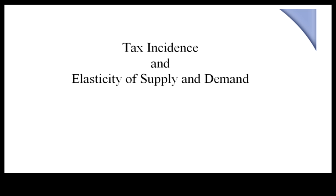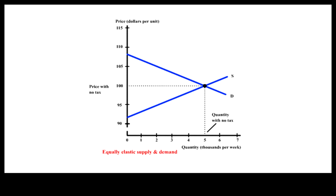Let us look at the typical supply and demand curves of a generic market. With these supply and demand curves, the market clearing price and quantity occurs at the intersection of the curves. When a uniform per-unit sales tax is imposed by the government, since the seller must pass on the collected sales tax to the government, he will continue to supply the pre-tax quantity only if he could still keep the pre-tax sales price. Essentially, the supply curve is shifted upwards by the amount of the per-unit sales tax.